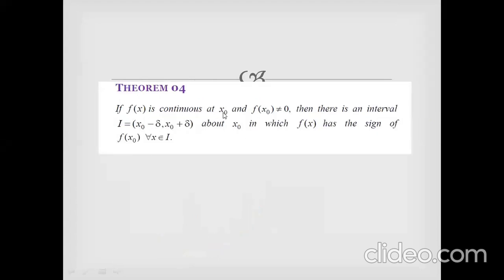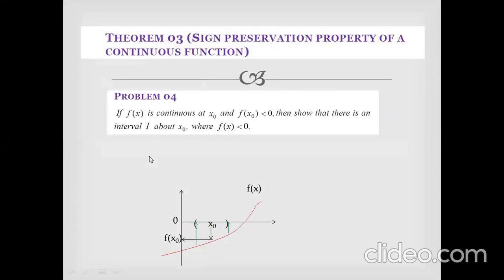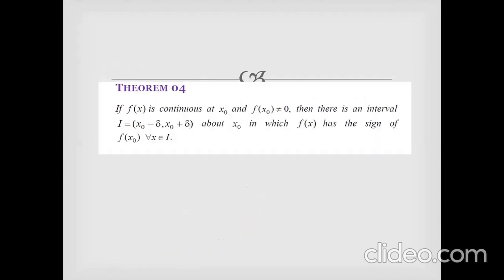Next theorem: if f(x) is continuous at x₀ and f(x₀) is non-zero, then there is an interval I = (x₀ − δ, x₀ + δ) about x₀ in which f(x) has the same sign as f(x₀). That is, f(x) is either consistently positive or consistently negative throughout that interval. These two results are combined in this theorem.